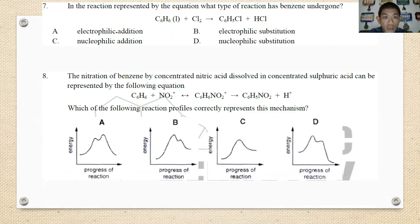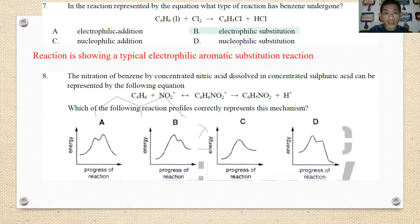Number seven: in the reaction between chlorine and benzene to form chlorobenzene, what is the type of reaction? The type of reaction is electrophilic substitution, more specifically electrophilic aromatic substitution.